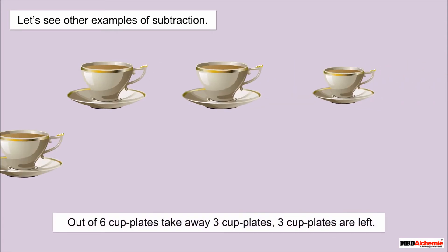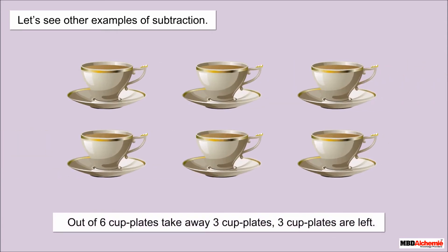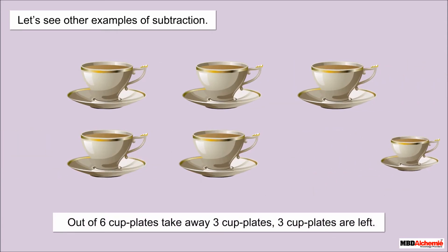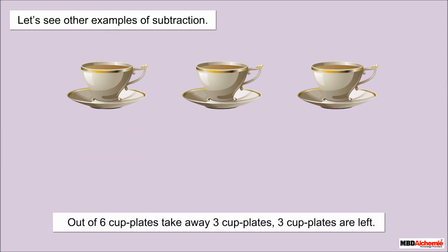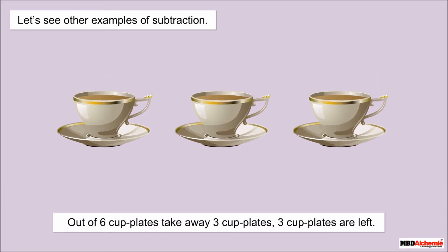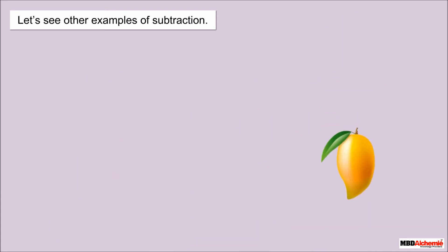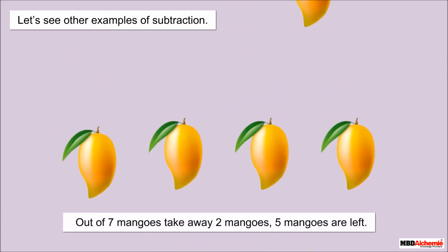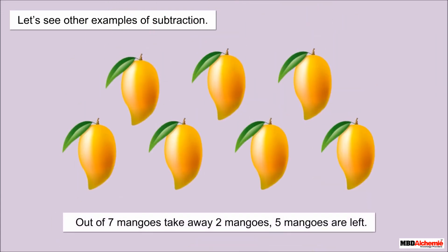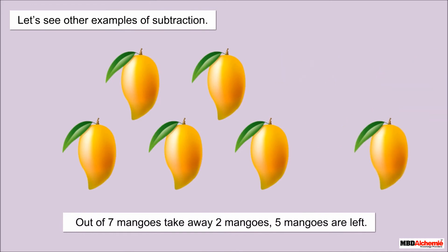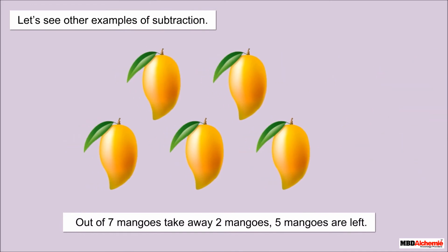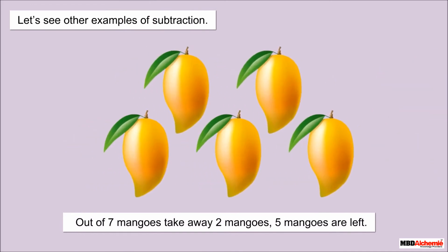Out of six cup plates, take away three cup plates — three cup plates are left. Out of seven mangoes, take away two mangoes — five mangoes are left.